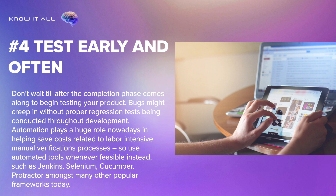Four, test early and often. Don't wait till after the completion phase comes along to begin testing your product. Bugs might creep in without proper regression tests being conducted throughout development. Automation plays a huge role nowadays in helping save costs related to labor-intensive manual verification processes, so use automated tools whenever feasible instead, such as Jenkins, Selenium, Cucumber, Protractor, amongst many other popular frameworks today.